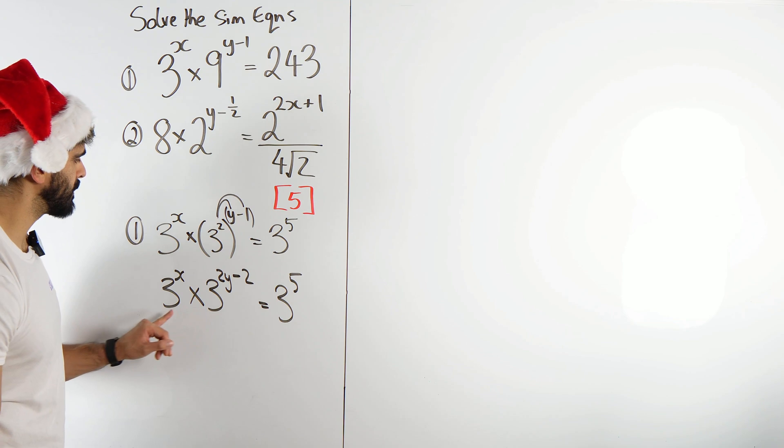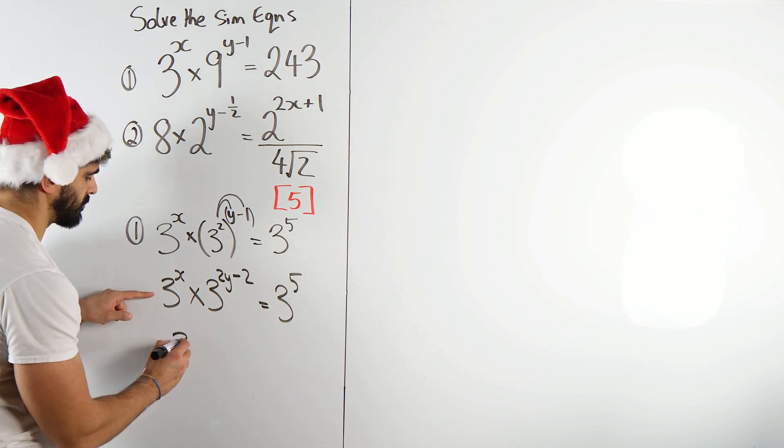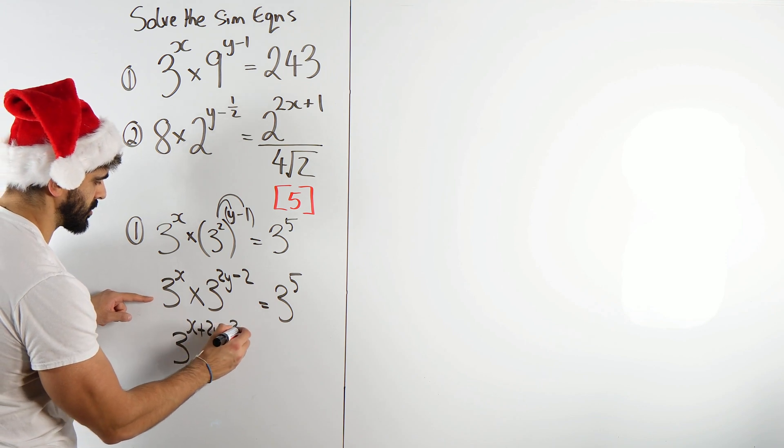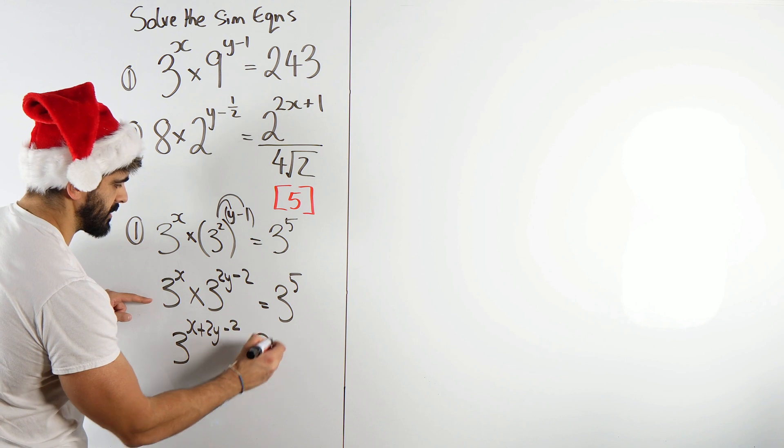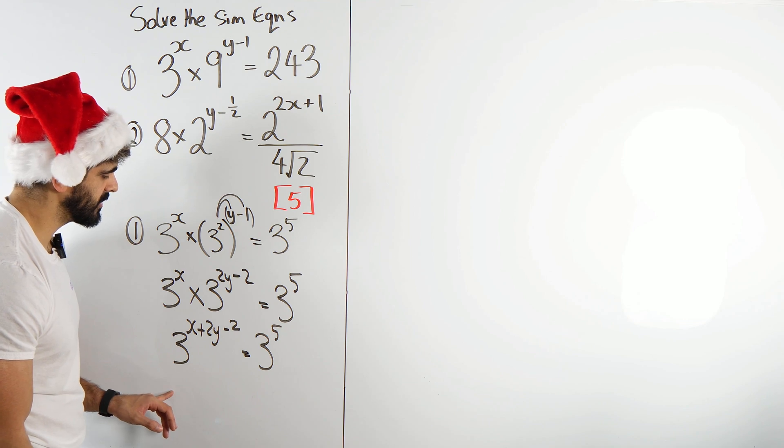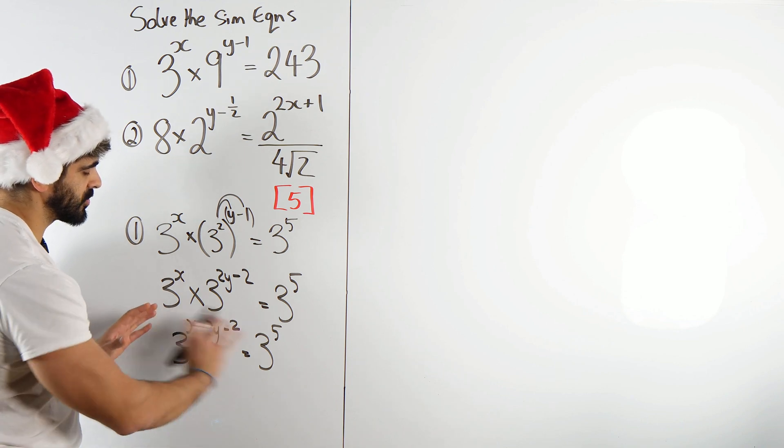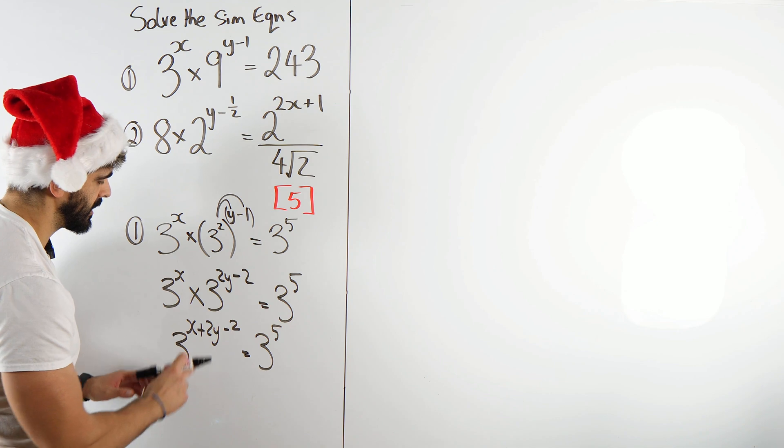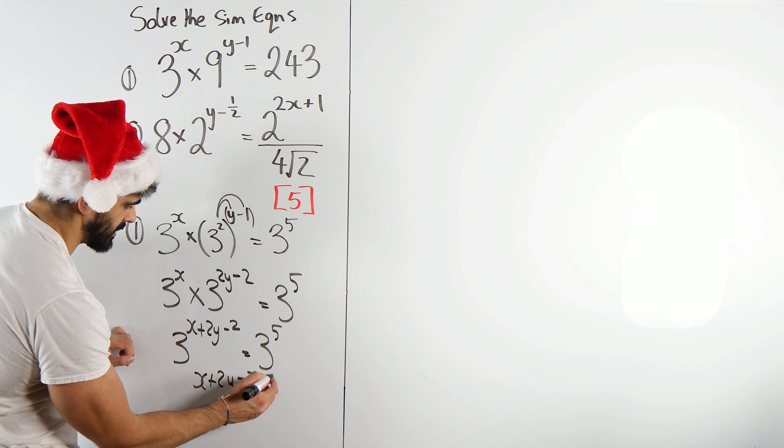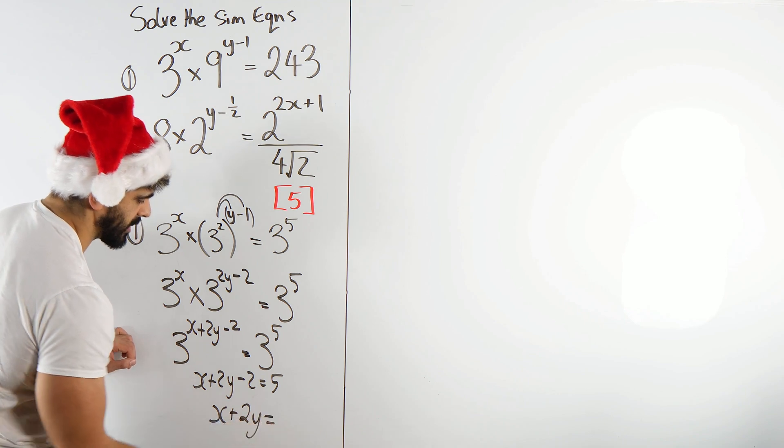Now what happens when you multiply two numbers with the same base? You add the powers. So you're going to have 3 to the power of x plus 2y minus 2 is 3 to the power of 5. Now the bases are the same on both sides. It must mean that the powers are the same. So it must mean that if these two sides are the same, the powers are the same.